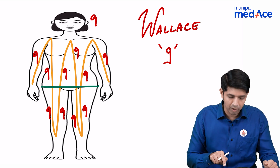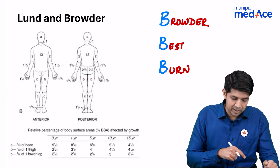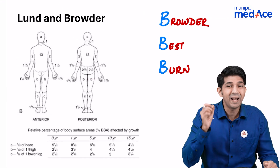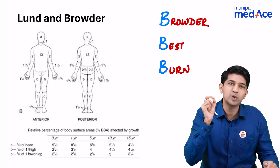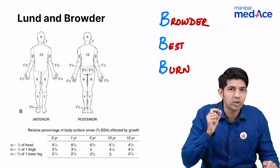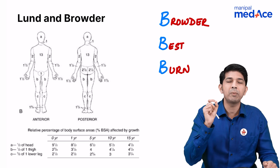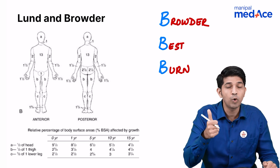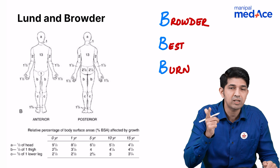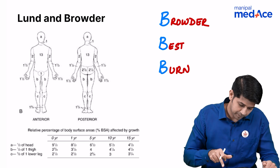This is the most common way of calculating burns, but the best way is by using the Lund and Browder chart. Remember the mnemonic: Browder's is best for burns.